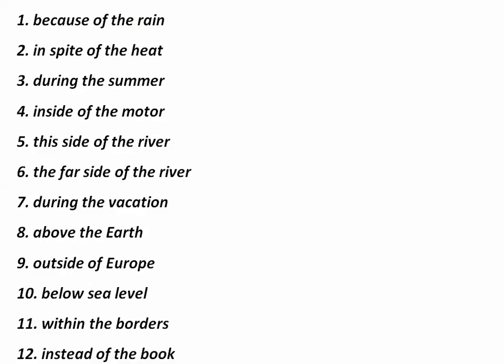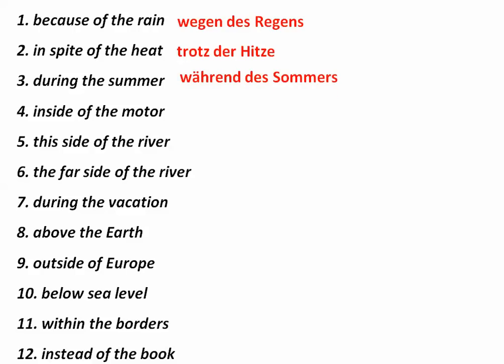Now let's do some prepositional phrases using genitive prepositions. 'Because of the rain' — 'wegen des Regens.' 'Regen' is a masculine noun, two syllables long, so it adds ES, in addition to 'der' changing to 'des.' In spite of the heat — 'trotz der Hitze.' 'Hitze' is a feminine noun, 'die Hitze,' so it changed to 'der,' and 'Hitze' itself took no ending. 'Während des Sommers' — 'Sommer' is masculine, as are all seasons in German, 'der Sommer,' changing to 'des,' and 'Sommer' is two syllables so it adds an S. 'Innerhalb des Motors' — 'Motor,' two syllables.